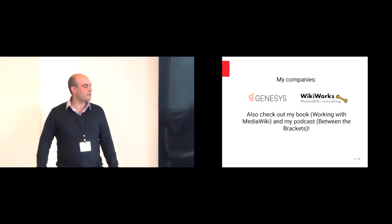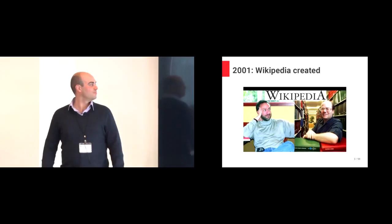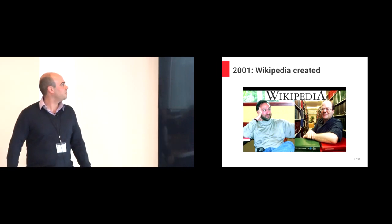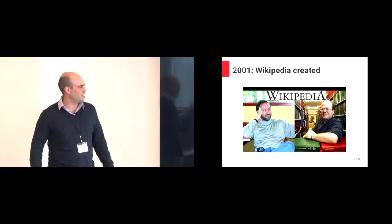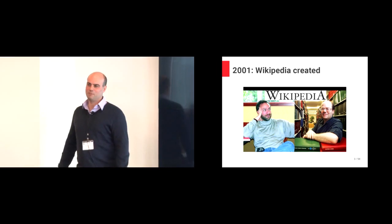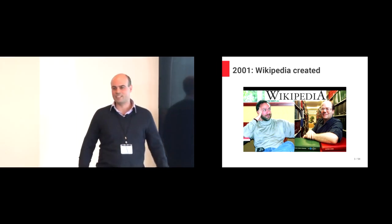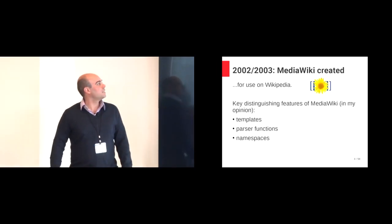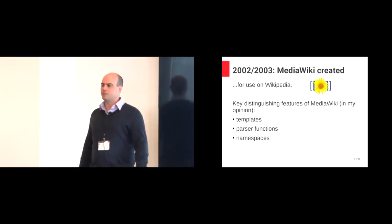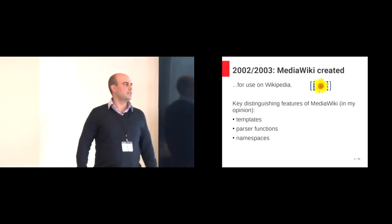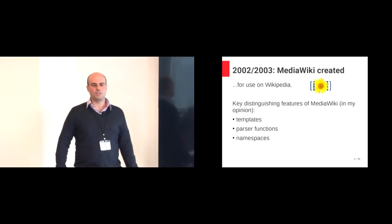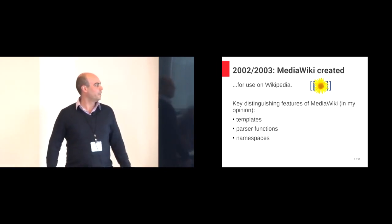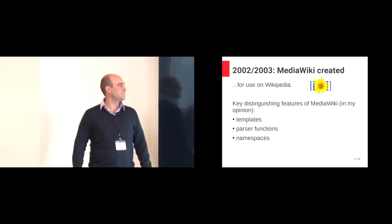Check out my book and my podcast. Let's go through a little bit of the history. In 2001, Wikipedia was created by these two handsome gentlemen. There's some controversy over who exactly did what, and now they hate each other, but that's another story. They were already using existing wiki software for Wikipedia, but decided to create their own software. It started in 2002, although it got its name in 2003. And there's the little Sunflower logo.